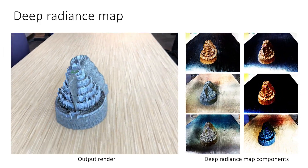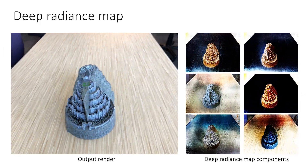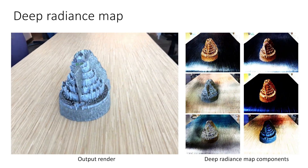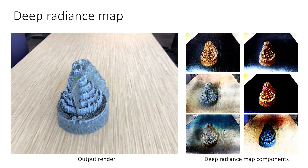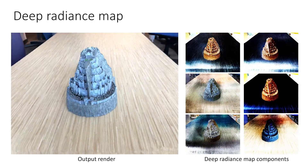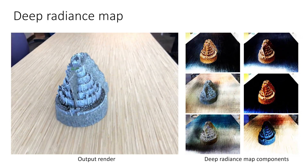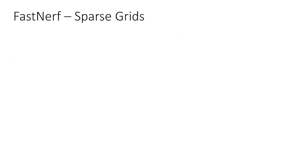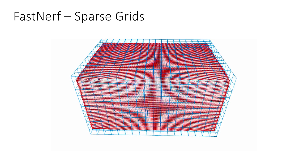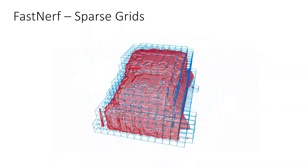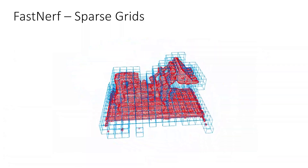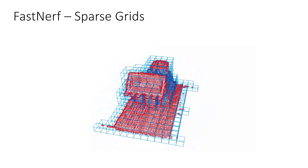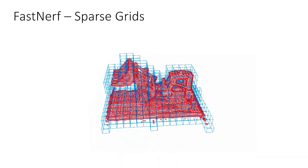Here is a visualization of the deep radiance map components produced by the position-dependent network. Once combined using the view-dependent weights, these components allow for reconstructing view-dependent effects such as specular reflections. While the deep radiance map components and their weights could be stored in a regular grid, this can be made more efficient by exploiting the empty space surrounding many man-made objects. To this end, we store all caches in sparse hierarchical volumetric grids that can be queried efficiently at inference time.